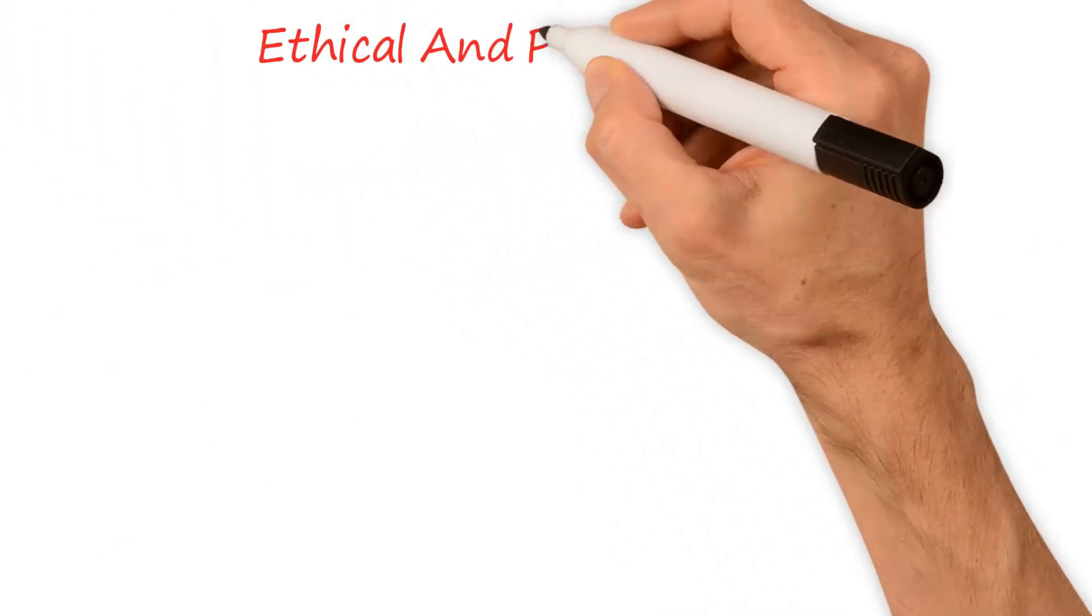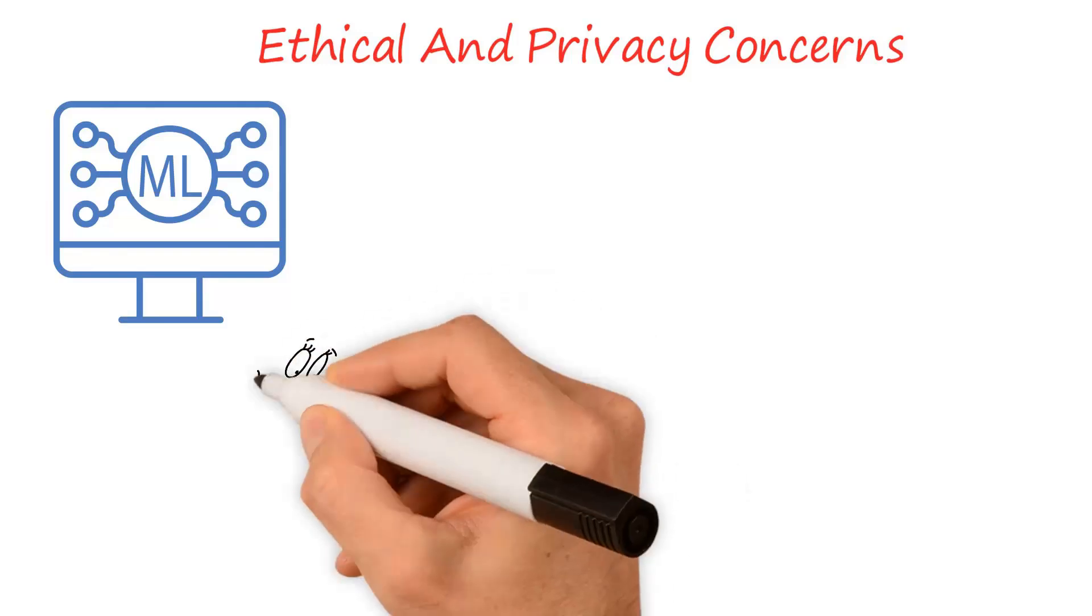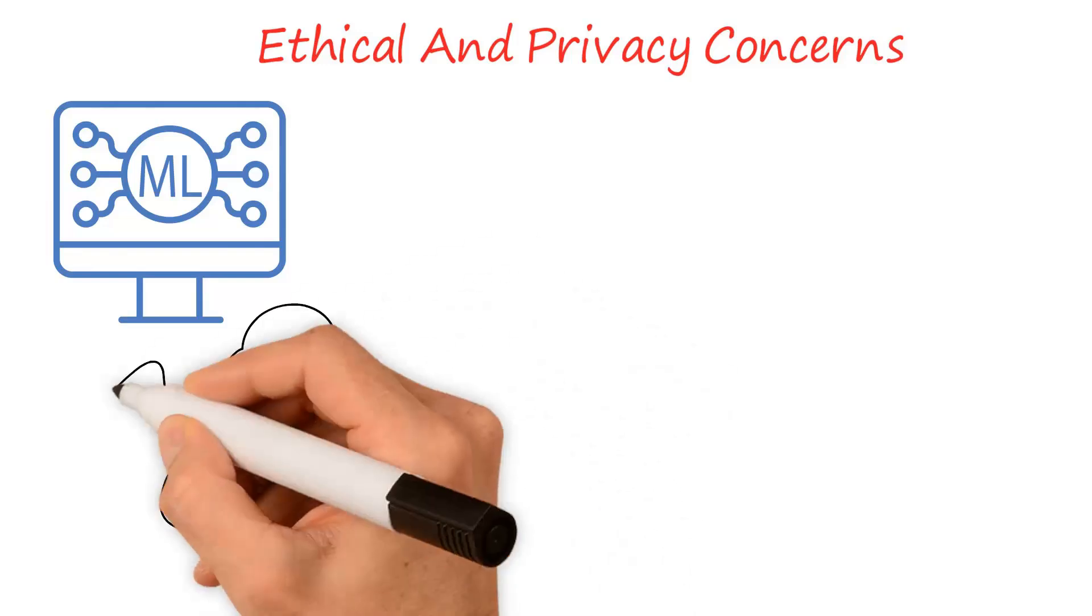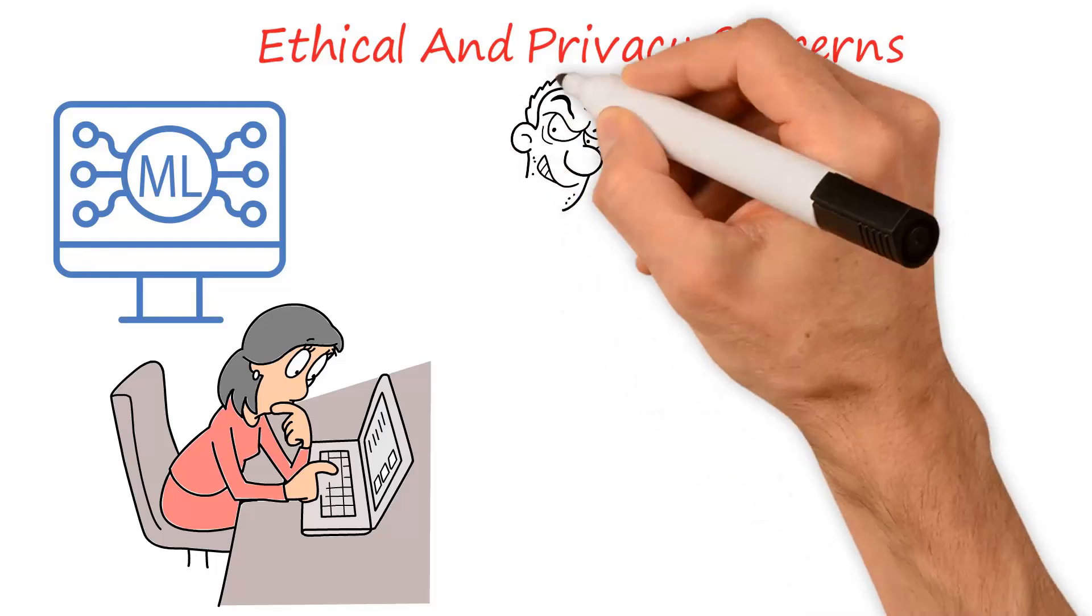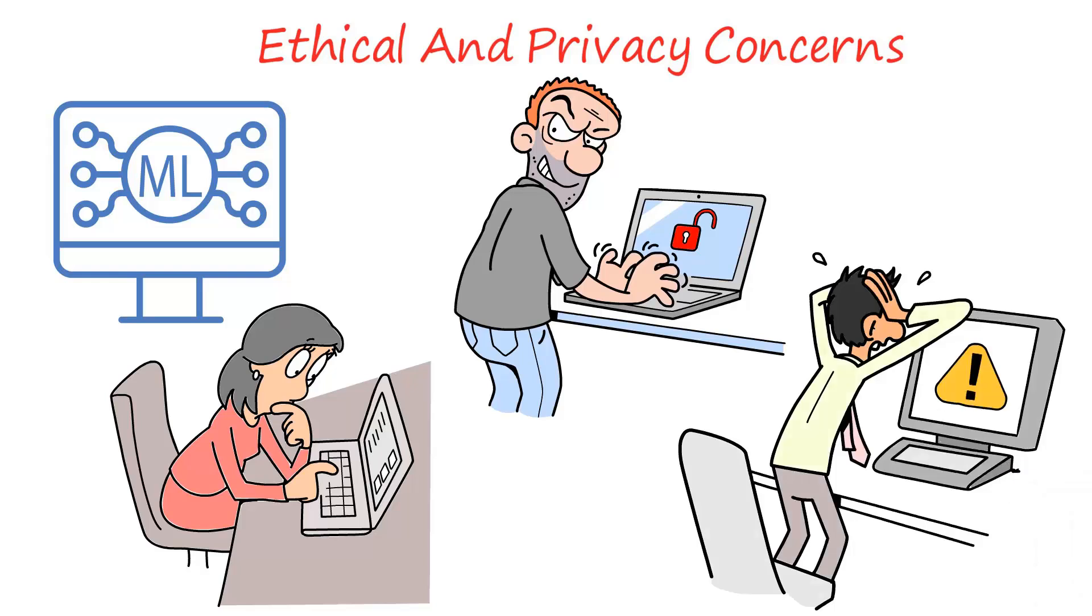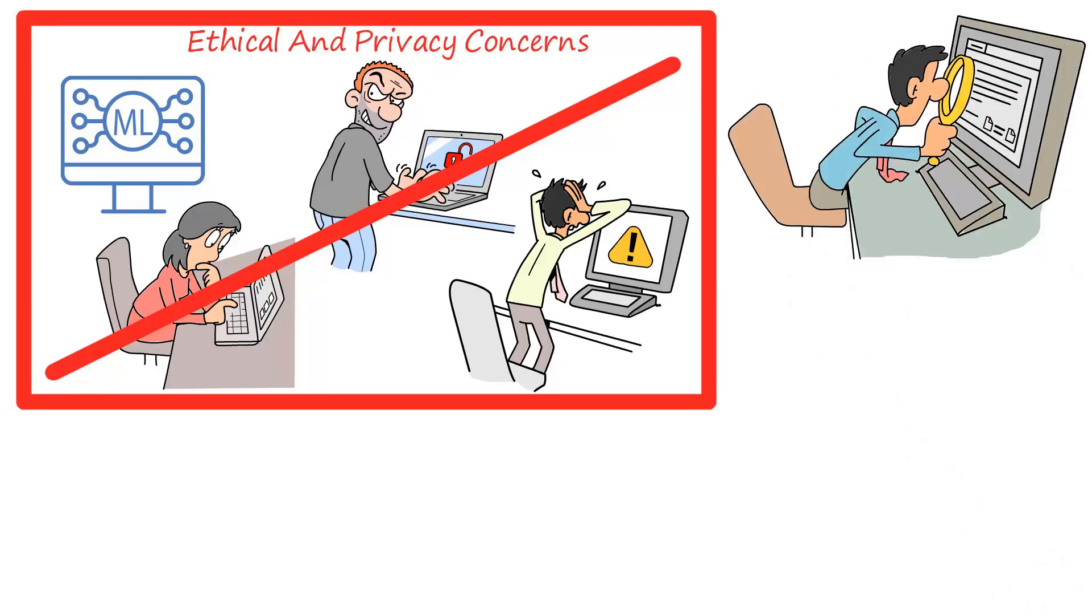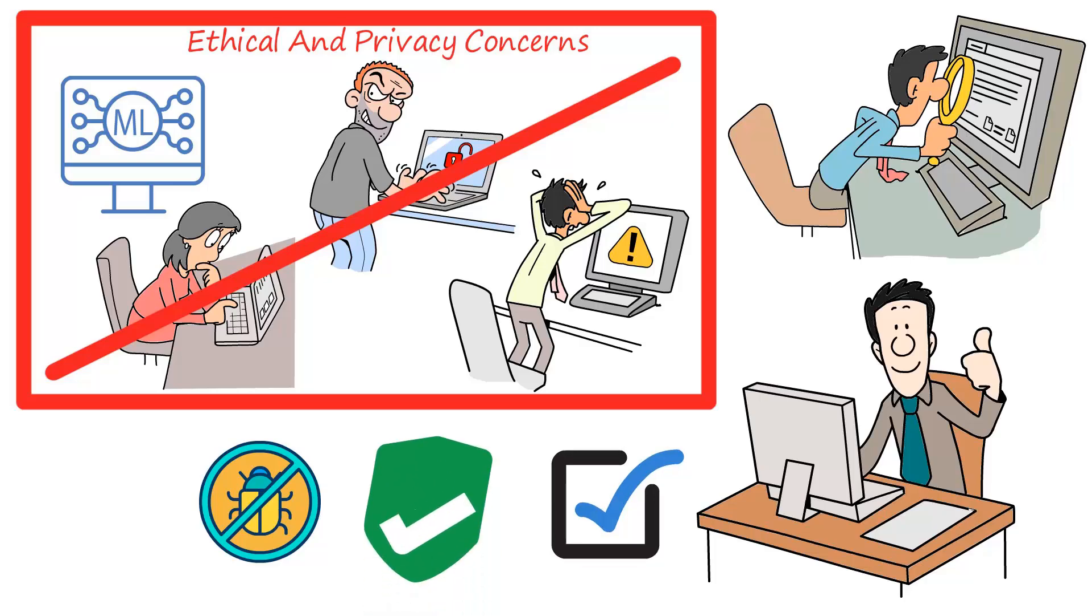There are also ethical and privacy concerns associated with the use of machine learning. As computers make decisions based on vast amounts of personal data, there's a risk that this information could be misused or abused, leading to potential harm to individuals. To mitigate these risks, it's important to carefully consider the ethical implications of machine learning and ensure that appropriate measures are in place to protect the privacy of individuals.